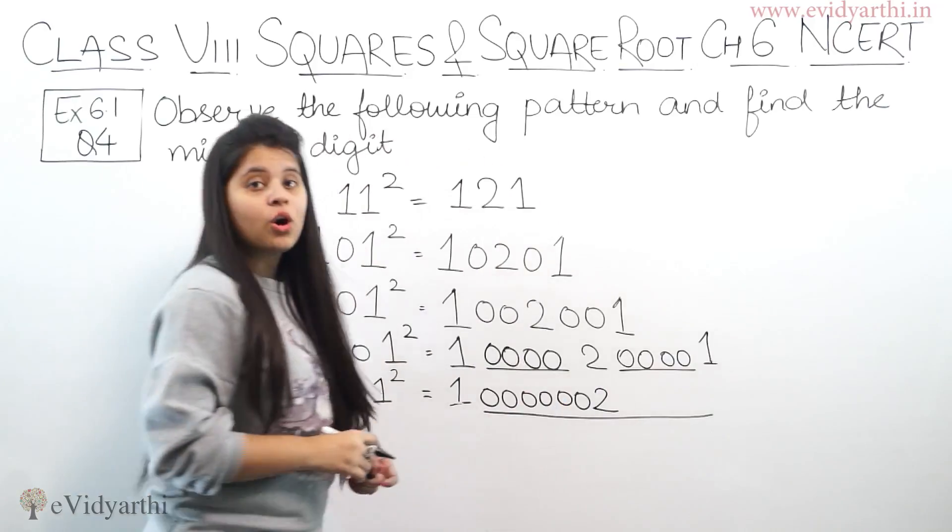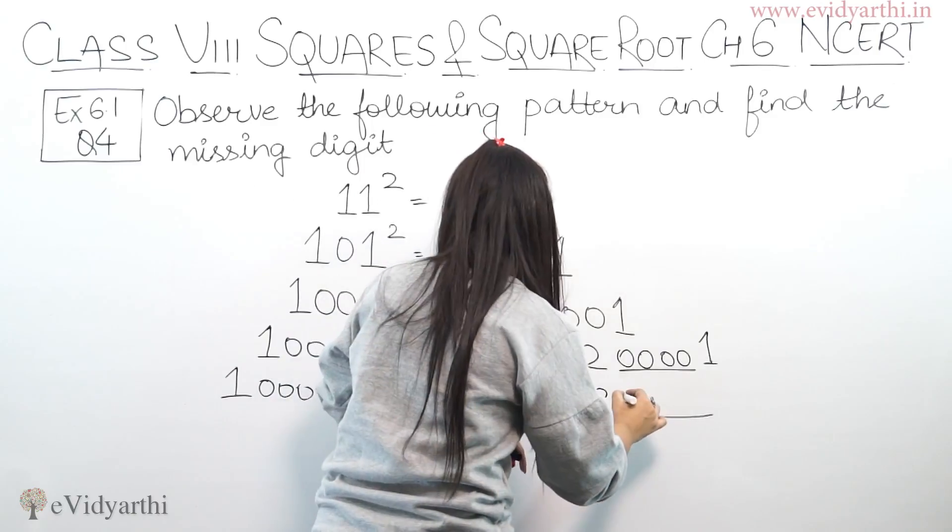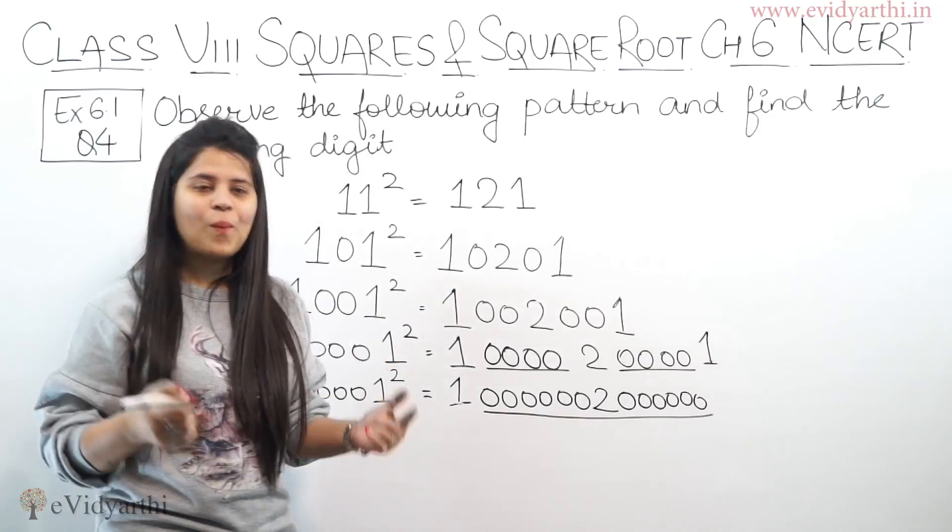So means यहाँ पर 2 आएगा और फिर 2 के बाद जितनी 0s पहले उतनी ही बाद में. So 1, 2, 3, 4, 5, 6 and last में 1.